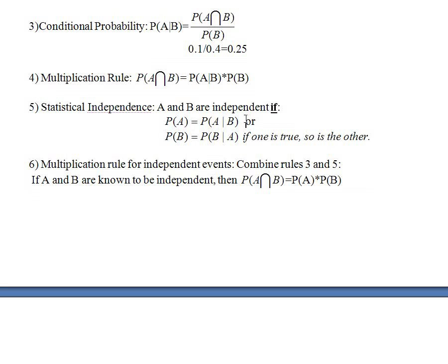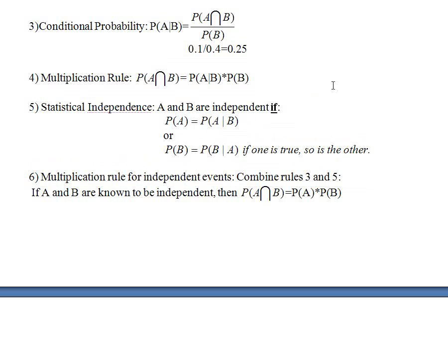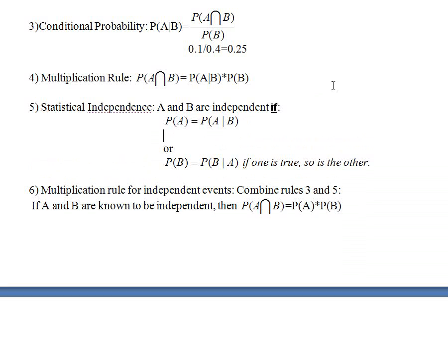So it says that if we know the probability of A is 50-50, suppose somebody tells us, but B is true — suppose B means they're a boy. If the probability of A is 50% and we know they're independent, then the probability of A given they're a boy is also 0.5.